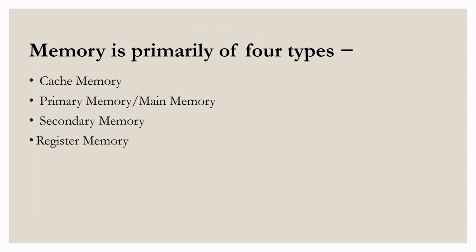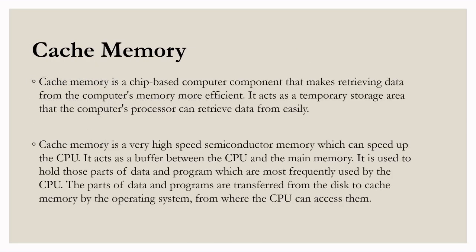Now let's talk about cache memory. Cache memory is a chip-based computer component that makes retrieving data from the computer's memory more efficient. It acts as a temporary storage area that the computer processors can retrieve data from easily. Cache is a very high speed semiconductor memory which can speed up the CPU. It acts as a buffer between the CPU and the main memory. It is used to hold those parts of data and programs which are most frequently used by the CPU. The parts of data and programs are transferred from the disk to cache memory by the operating system, from where the CPU can access them.